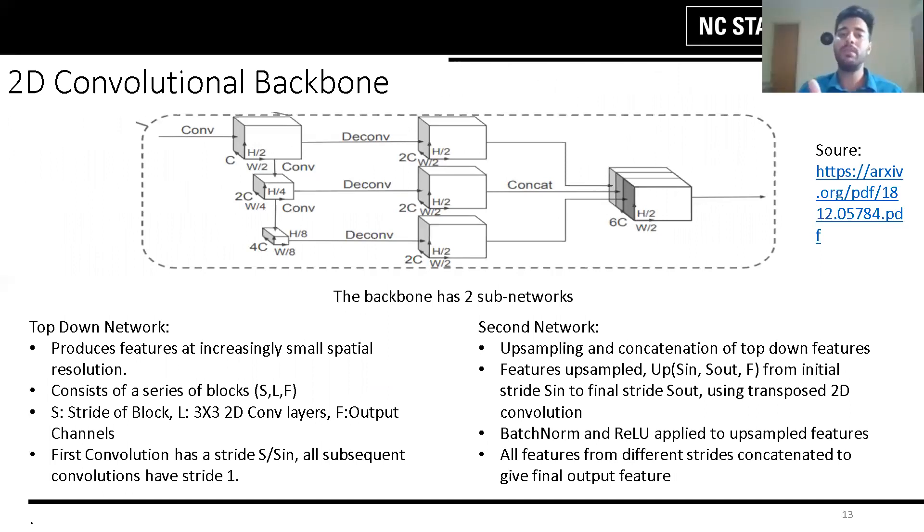At the 2D convolutional backbone stage, the pseudo image is processed into a high level representation. The backbone has basically two sub-networks.